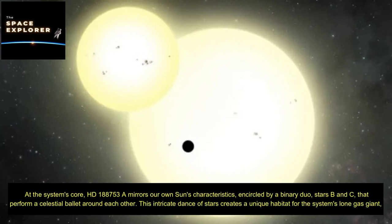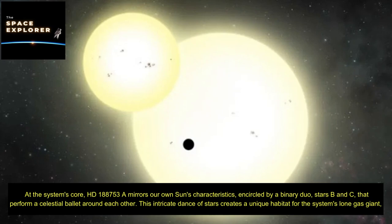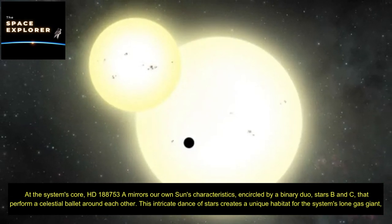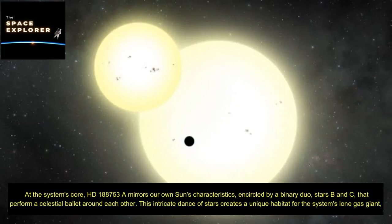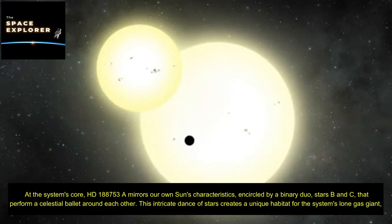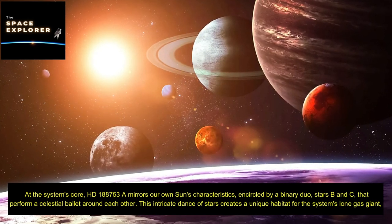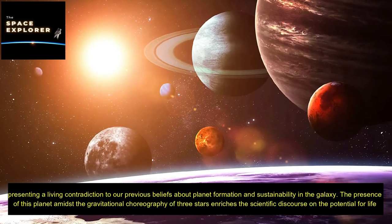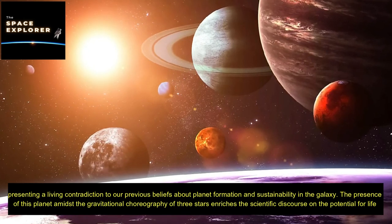At the system's core, HD 188,753 AB mirrors our own sun's characteristics, encircled by a binary duo, stars B and C, that perform a celestial ballet around each other. This intricate dance of stars creates a unique habitat for the system's lone gas giant, presenting a living contradiction to our previous beliefs about planet formation and sustainability in the galaxy.